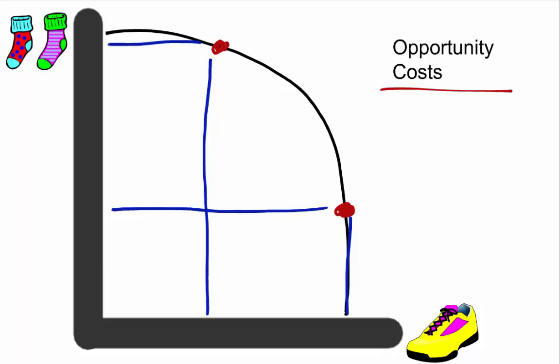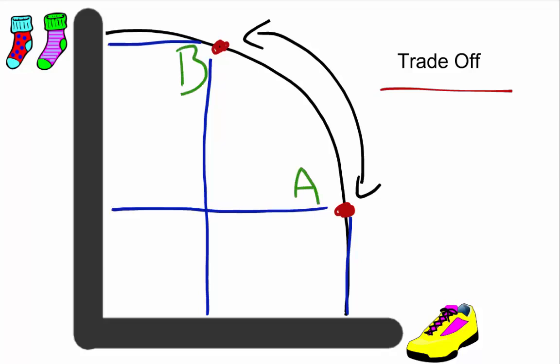Another thing that production possibility diagrams show is trade-offs. And this is something which is pretty much exactly the same as the opportunity cost. The trade-off is the action of the opportunity cost. So we're going to stick to our two points. If we were to change what we will call point A to point B, the action of changing from point A to point B is called a trade-off.